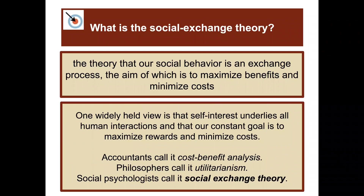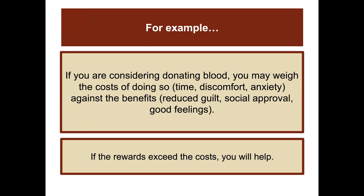Social exchange theory is the theory that our social behavior is an exchange process, the aim of which is to maximize benefits and minimize costs. One widely held view is that self-interest underlies all human interactions — our constant goal is to maximize rewards and minimize costs. Accountants call it cost-benefit analysis, philosophers call it utilitarianism, and social psychologists call it social exchange theory. For example, if you're considering donating blood, you may weigh the costs — time, discomfort, anxiety — against the benefits — reduced guilt, social approval, good feelings. If the rewards exceed the costs, you're more likely to help.